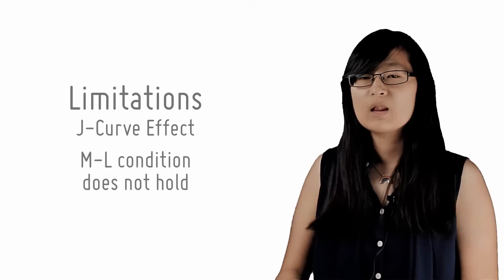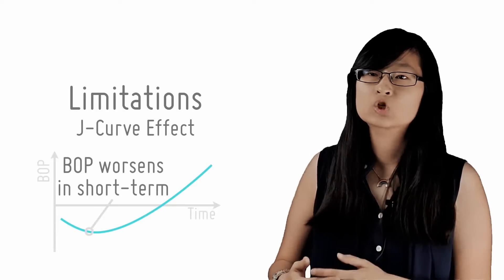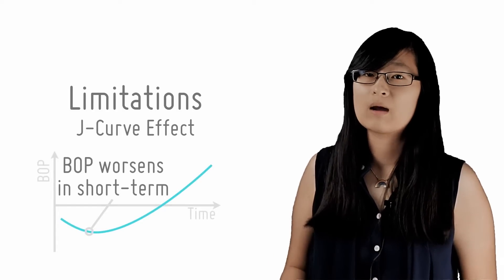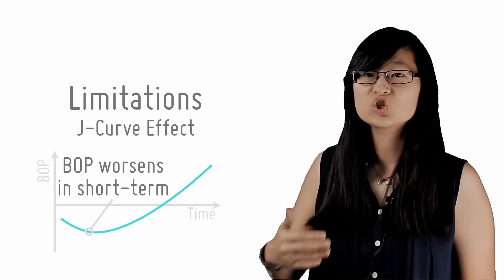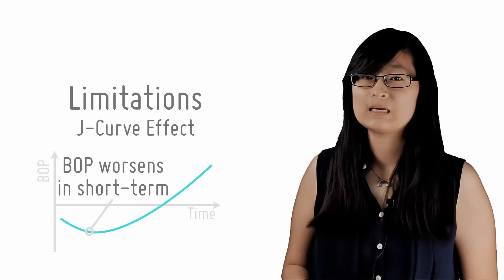A devaluation of a currency is likely to worsen BOP in the short term, and when illustrated on a diagram, this creates a J-like curve, hence the name.